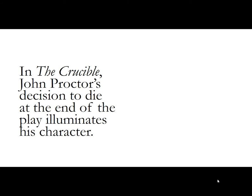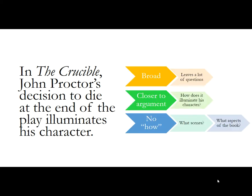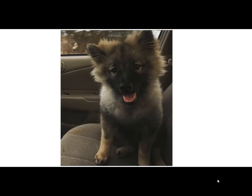Here's the second thesis: 'In The Crucible, John Proctor's decision to die at the end of the play illuminates his character.' We get a few things that are a little better — it's closer to argument. We get a sense that his decision to die is the sacrifice we're discussing. Spoiler alert if you haven't read the play. It's still broad, though. It leaves a lot of questions: What scenes are we going to discuss? How does it illuminate his character? What aspects of the book are we looking at? It's kind of like an adolescent thesis. That's also a sad picture because it's a dog that is older than that now, and it's in my Toyota Corolla, which I don't have anymore because I totaled it two weeks ago.